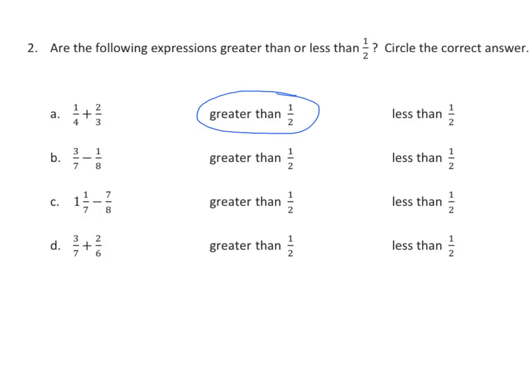We have 3 sevenths minus 1 eighth. 3 is less than half of 7, so our minuend is less than 1 half, and now we're subtracting from that. So we know that the answer has to be less than 1 half.